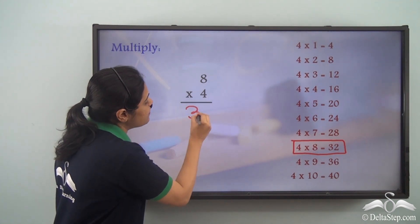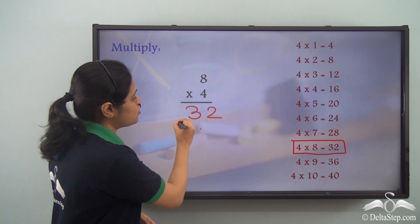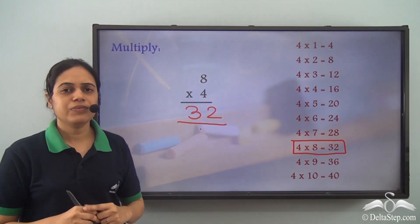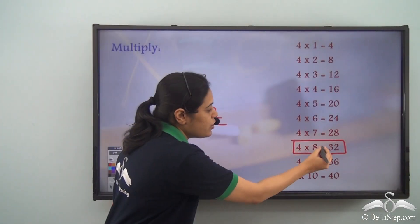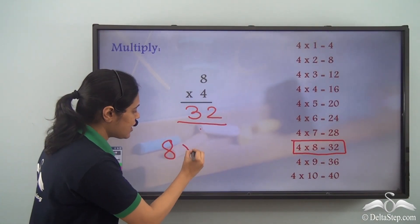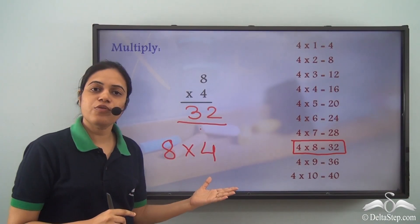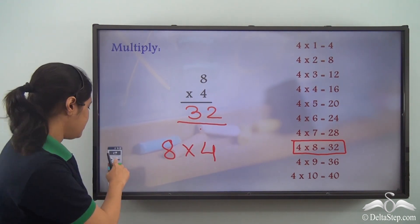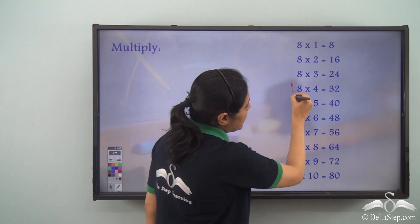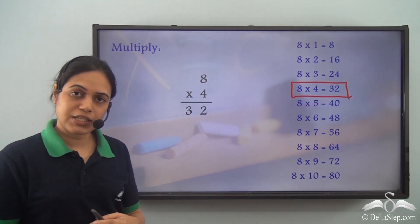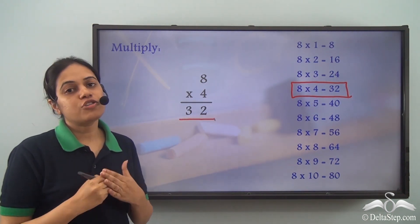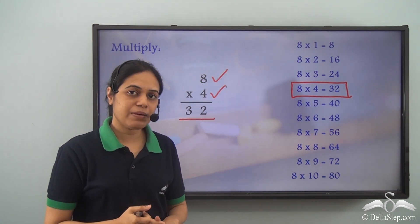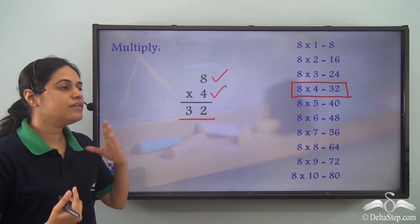So the answer of this multiplication is 32. Instead of adding it 4 times, I can simply use the multiplication table and get the answer. There is another way: 4 into 8 is the same as 8 into 4, so 8 times 4 is the same as 4 times 8. I can also use the table of 8. Looking at the table of 8, 8 into 4 is 32. It does not matter whether we use the table of 8 or the table of 4 — as long as we remember the table correctly, we will get the same correct answer.